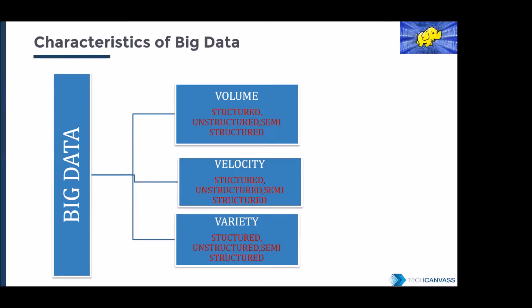Once you launch a product in the market and want to see the reaction, people will be constantly tweeting, retweeting, and talking about it — events are generated at a very constant rate. You don't have control over limiting that speed or rate, so velocity is also an important characteristic of big data. Similarly, it can be structured, unstructured, or semi-structured data.